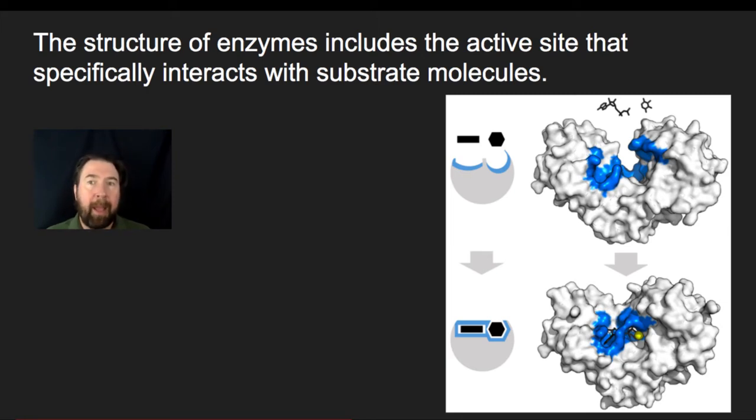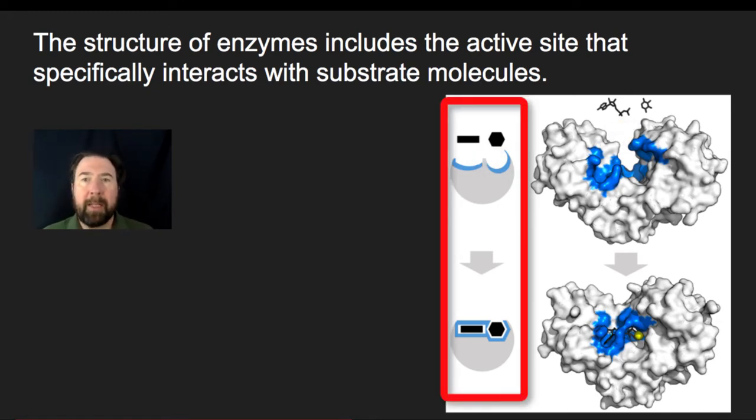As they fold up, there will be certain pockets, I often think of them as little nooks and crannies, where there are chemical properties or chemical attractions that will allow the fitting of certain substrates. In this particular example, I have two models. One is a cartoony model where you can see that the shapes, my rectangle and hexagon, fit nicely into the shapes of my cartoon, and there's an induced fit where those two come together.